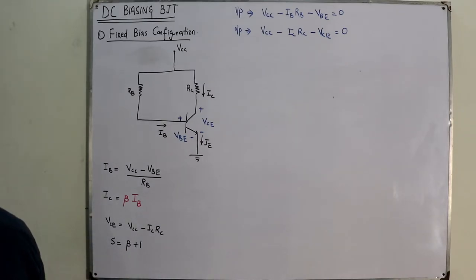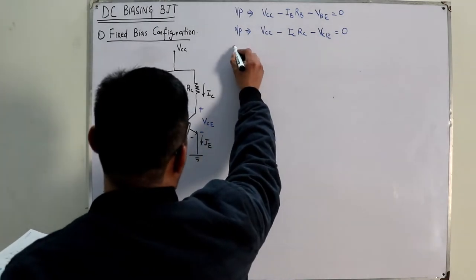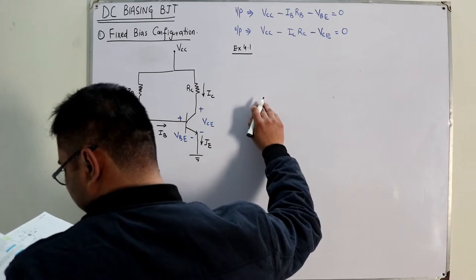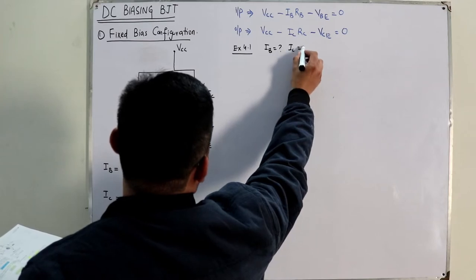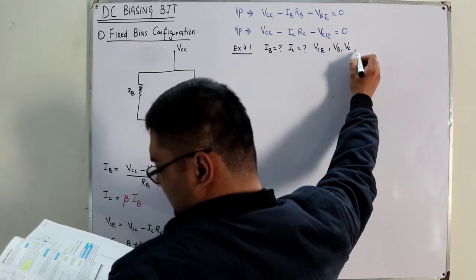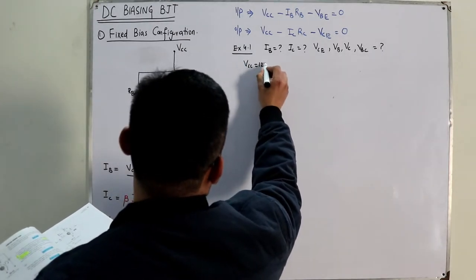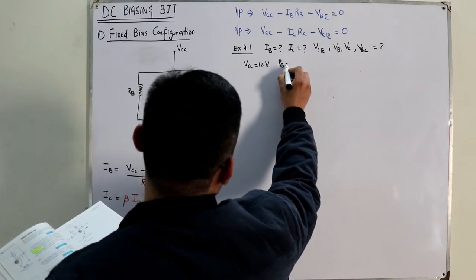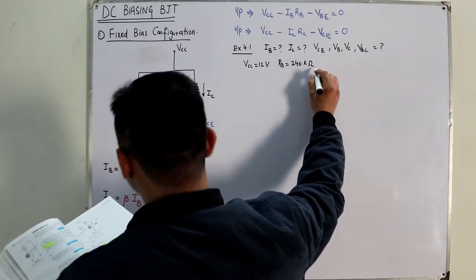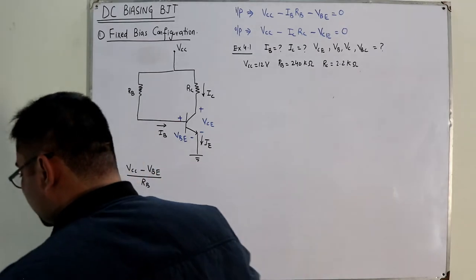Let's look at Example 4.1 for the fixed bias configuration. We need to determine IB, IC, VCE, VC, VB, and VBE. The given values are: VCC = 12 volts, RB = 240 kilo-ohms, RC = 2.2 kilo-ohms, and beta = 50. These are all unknown quantities we need to find.